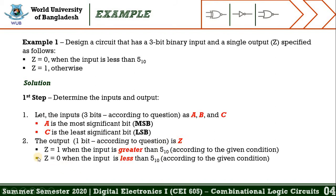We already read the condition of the output. To repeat: Z should be 1 when the input is greater than decimal 5, and Z should be 0 when the input is less than decimal 5, according to the given condition.